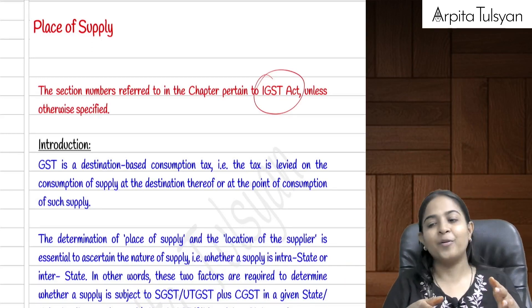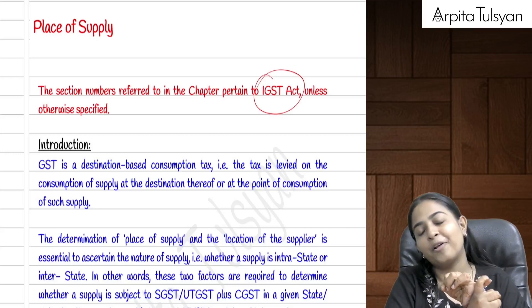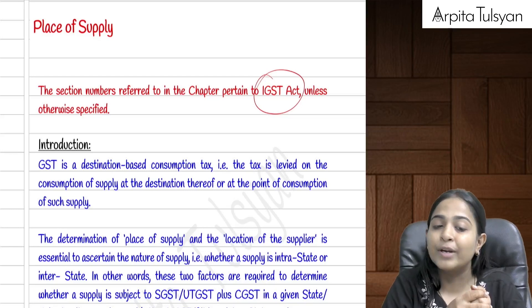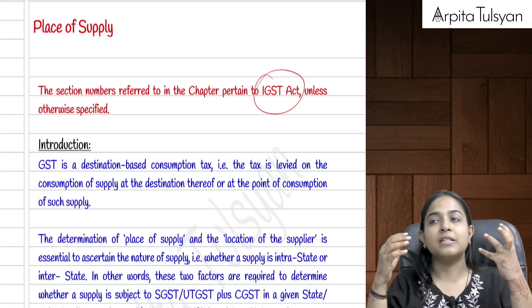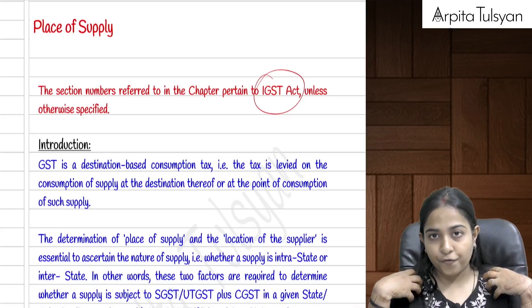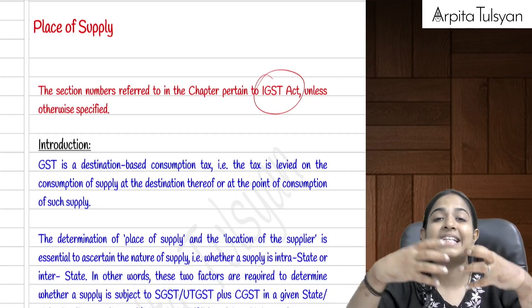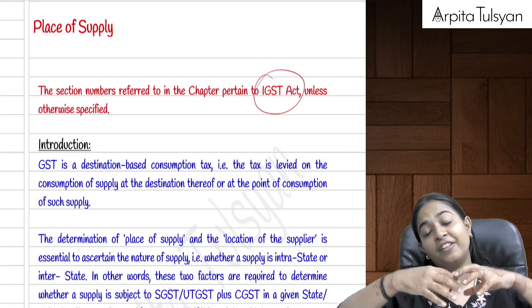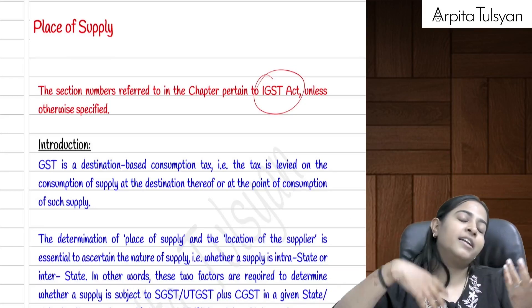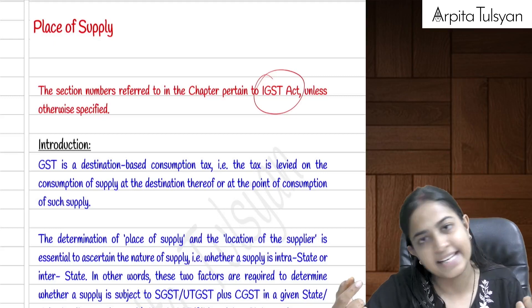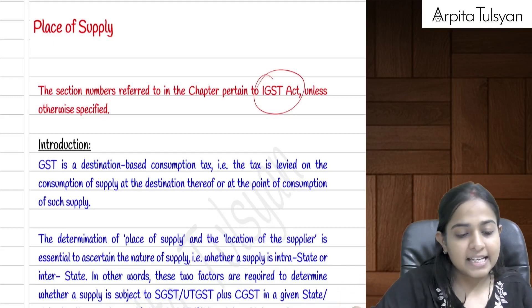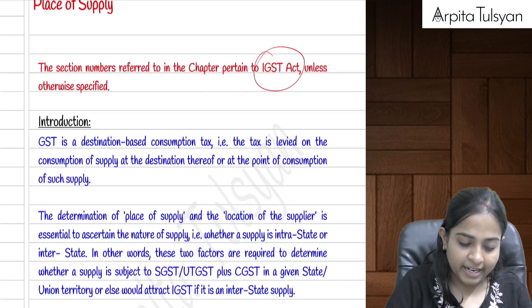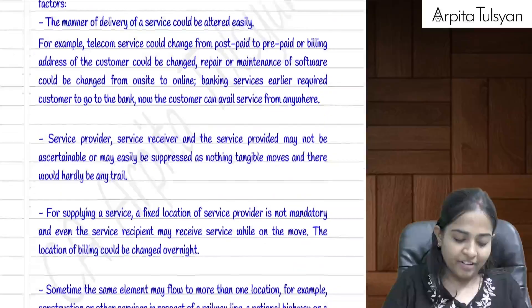If the location of the supplier and the place of supply are in the same state or union territory, it is an intrastate supply. If they are in two different states, or one state and one union territory, or two different union territories, it is called an interstate supply.